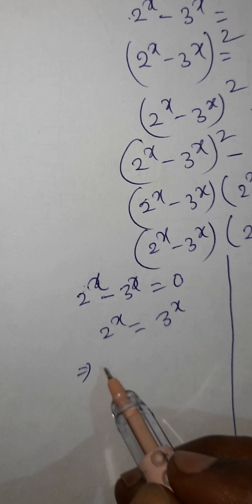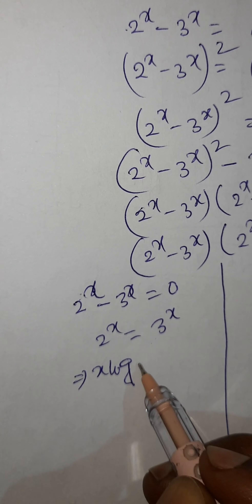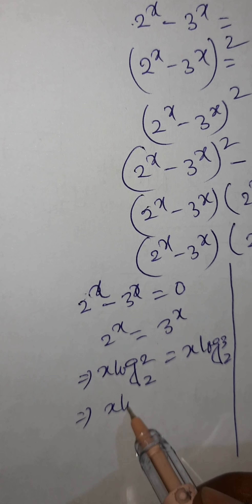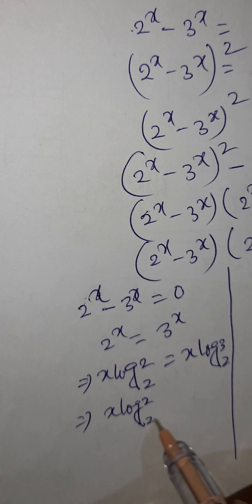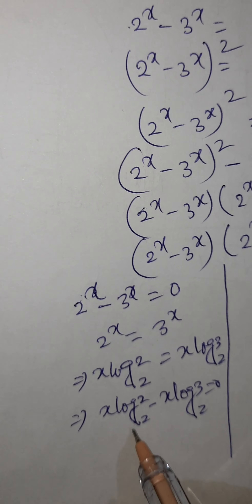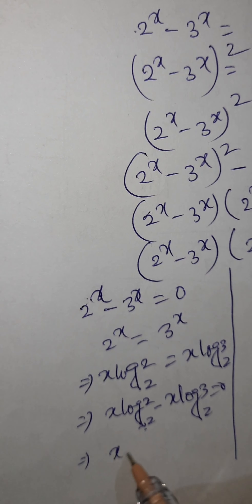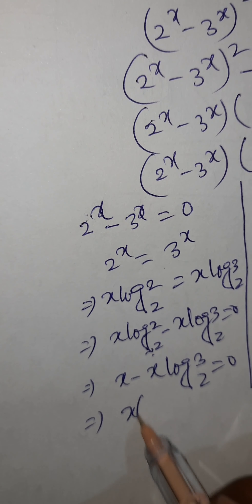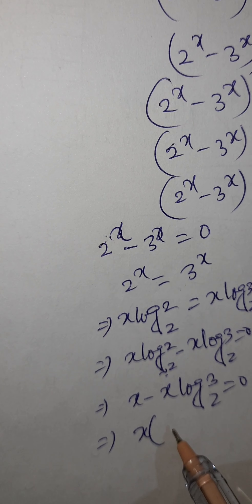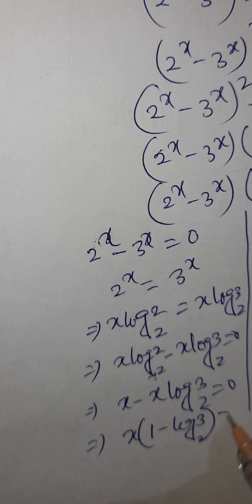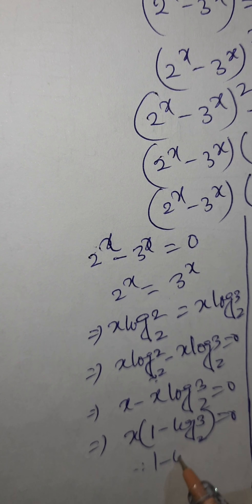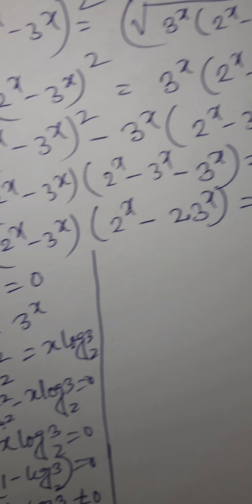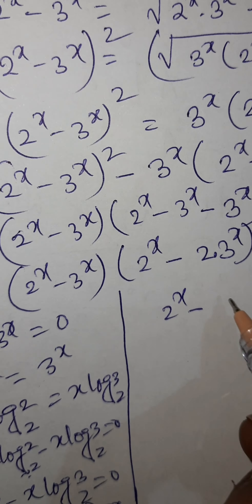First condition: 2 to the power x minus 3 to the power x equals 0, so 2 to the power x equals 3 to the power x. Taking log base 2 of both sides: x times log base 2 of 2 equals x times log base 2 of 3. Since log base 2 of 2 equals 1, we get x minus x times log base 2 of 3 equals 0, so x times (1 minus log base 2 of 3) equals 0. Since (1 minus log base 2 of 3) is not zero, x equals 0.